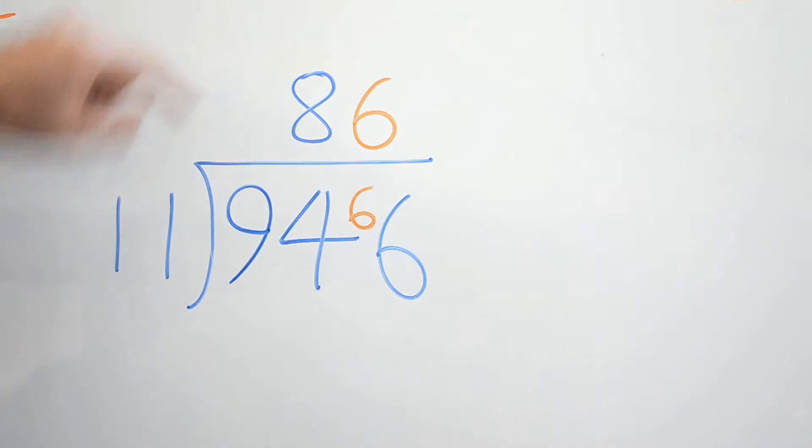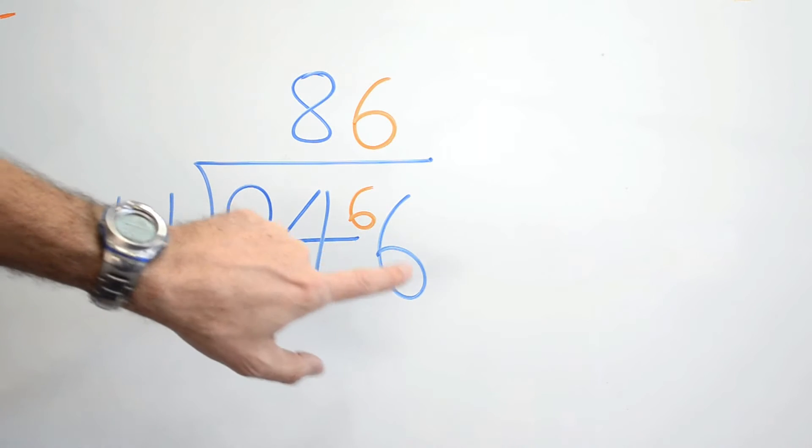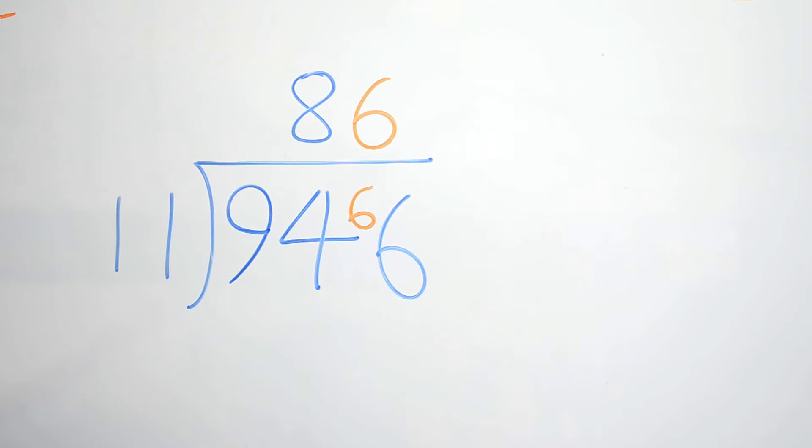So our answer is 86. 946 divided by 11 is 86. We've broken it into small chunks. We've treated 94 as 94 tens, divided that by 11 first, found a remainder and then divided that by 11. So, it works the same way for 11s and 12s, we can do big numbers or small numbers.